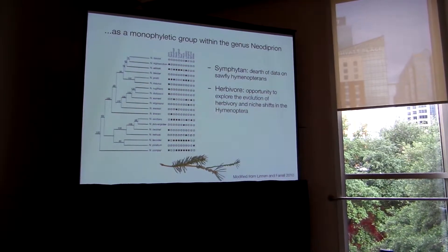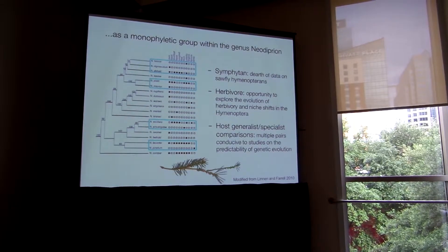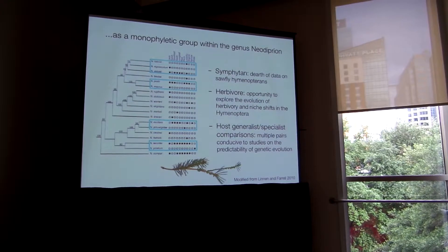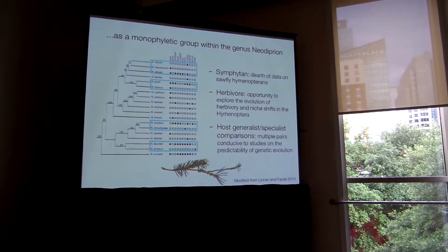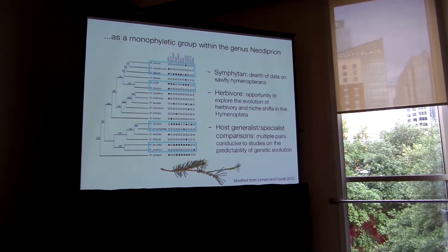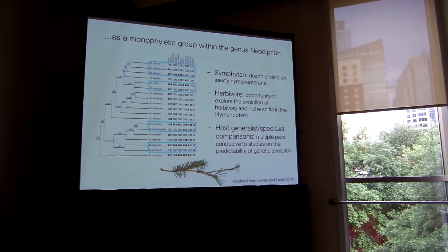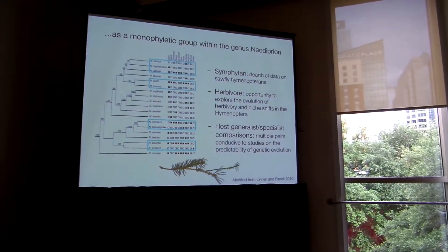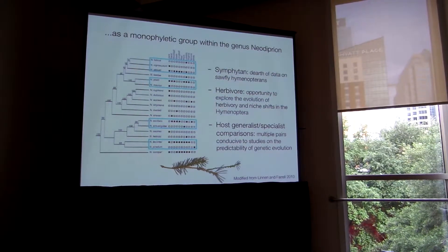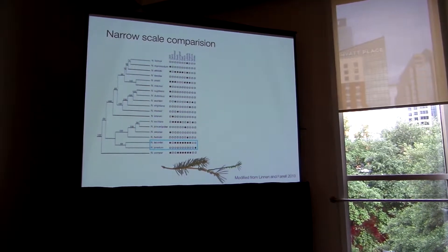Sawflies are true herbivores that consume plant tissue. I'd like to draw your attention to the number of generalist-specialist sister taxa pairs within this group. These are perfect for studying the impact of host use on chemosensory evolution. And since they're all closely related to each other, I can compare them from the phenotypic to the genetic level and look for similarities in the repeated patterns that occur.